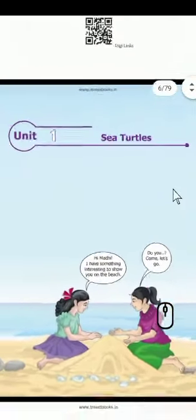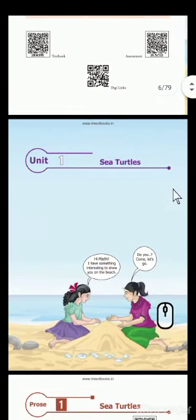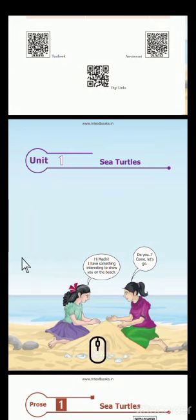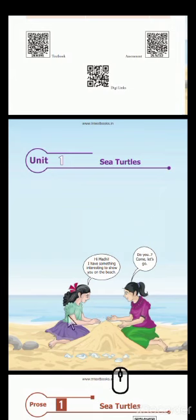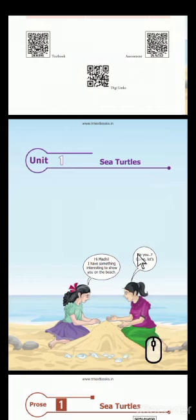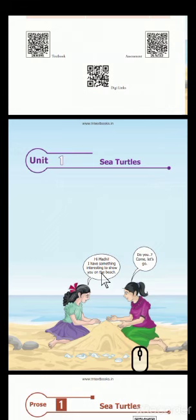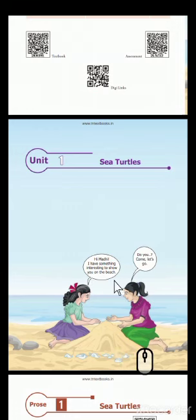First, let's have a closer look at this picture which is given here. In the background you can see a beach, and in the foreground you can see these two little girls playing in the sand, making a sand castle. A dialogue pop-up shows the conversation going on between these two girls: 'Hi Madi, I have something interesting to show you on the beach.' 'Do you? Come, let's go.'